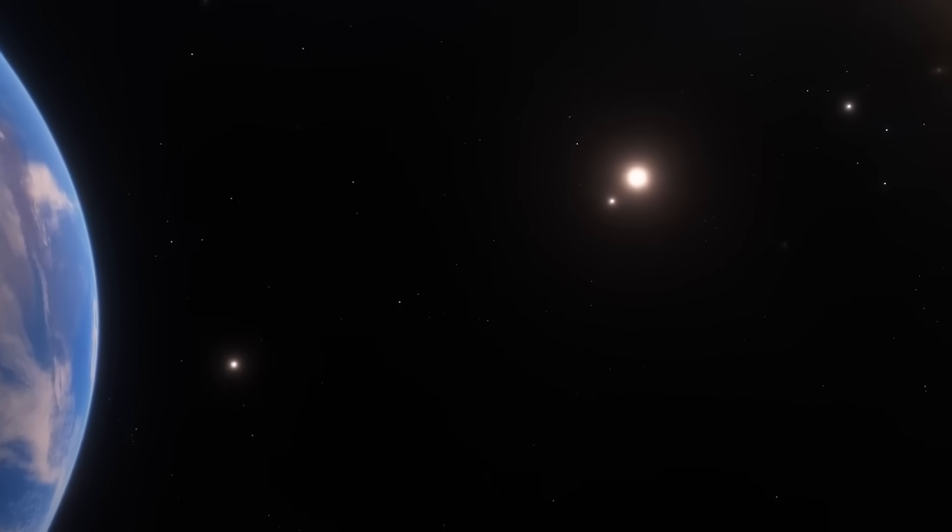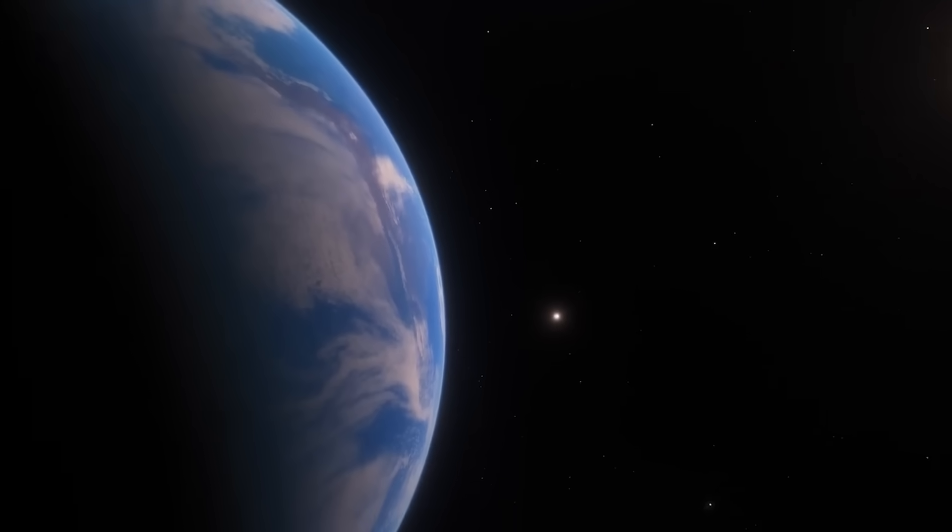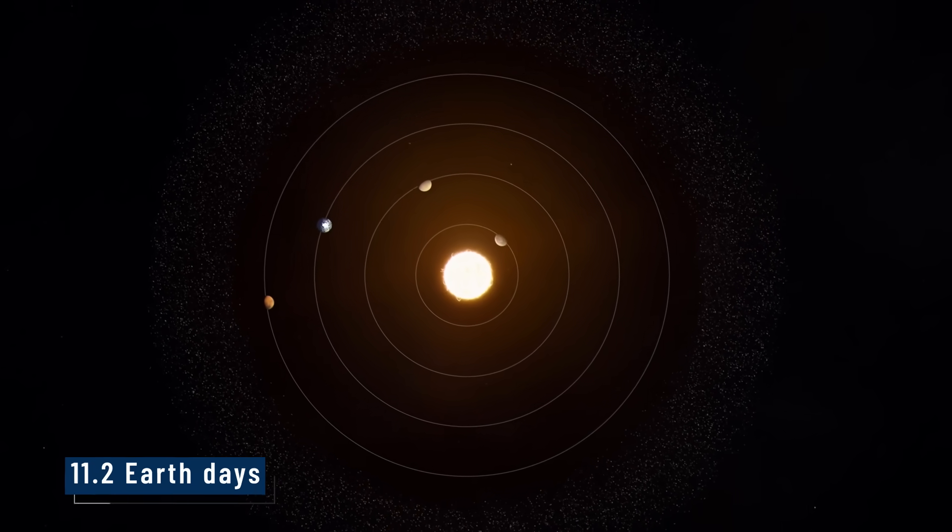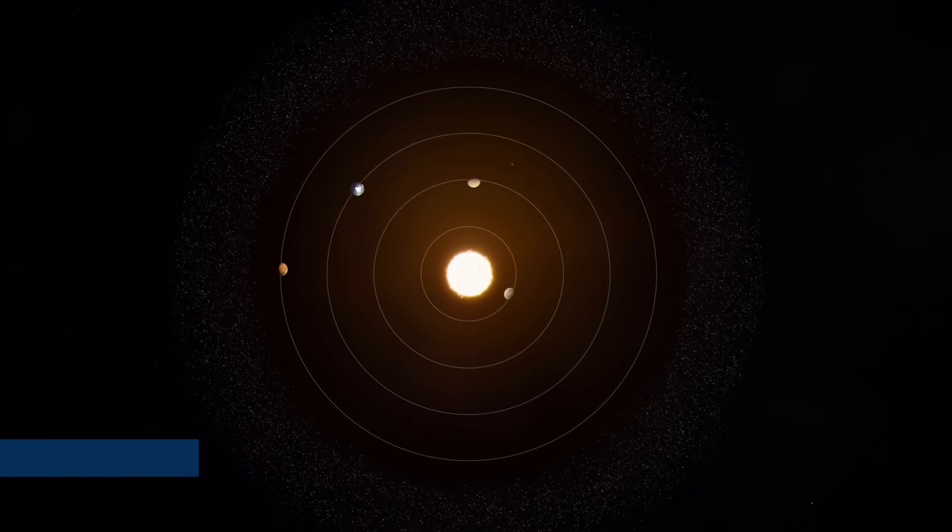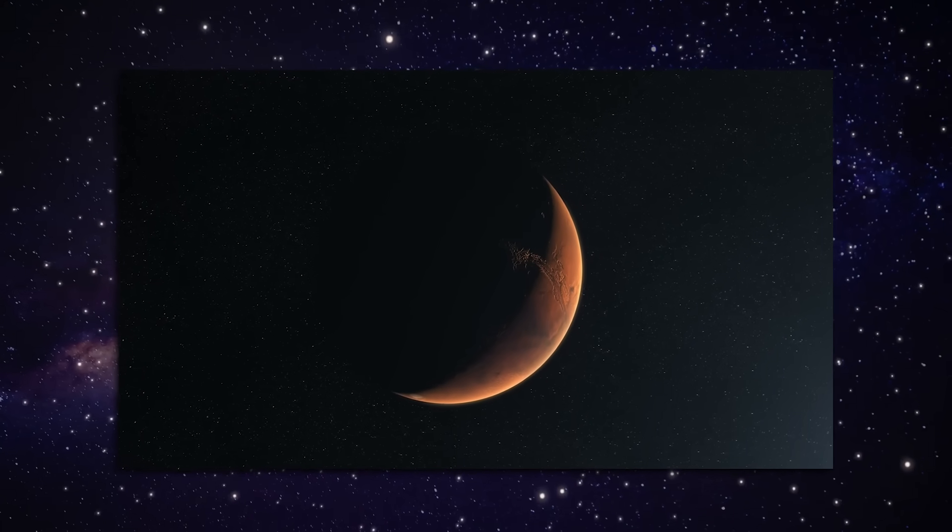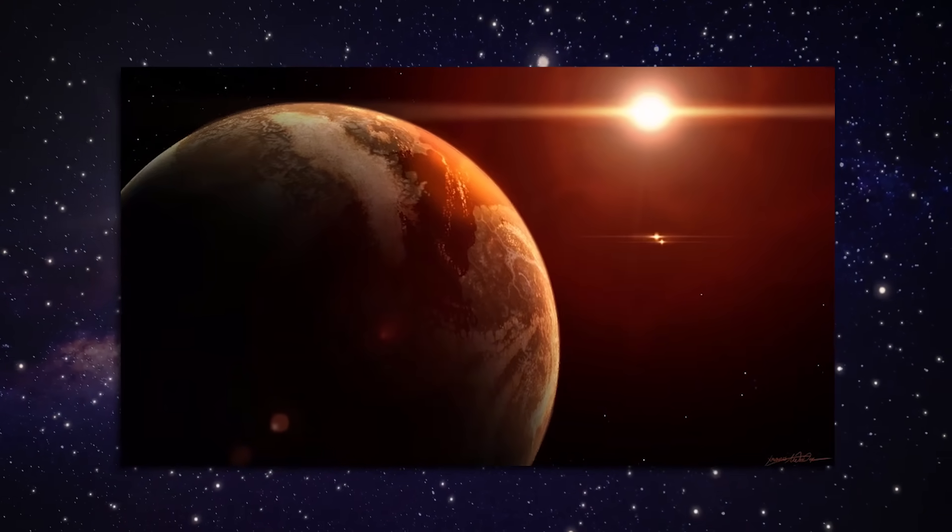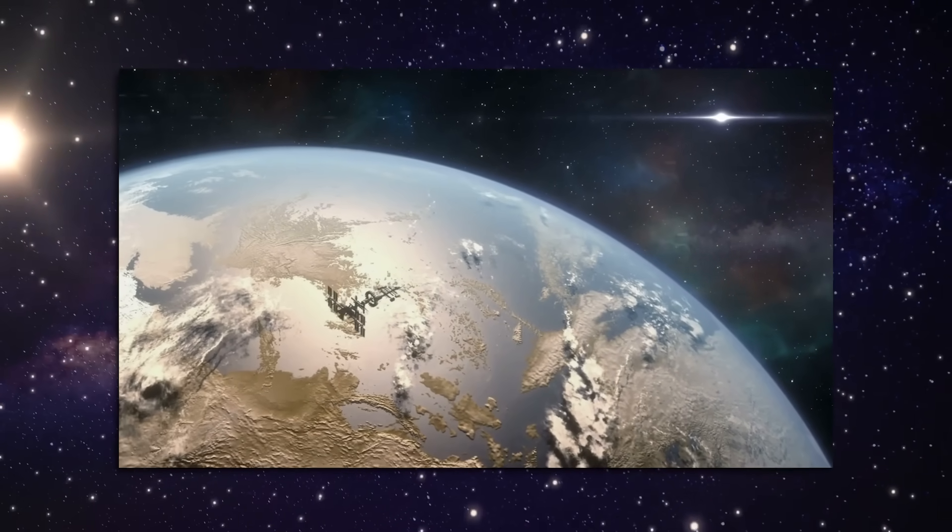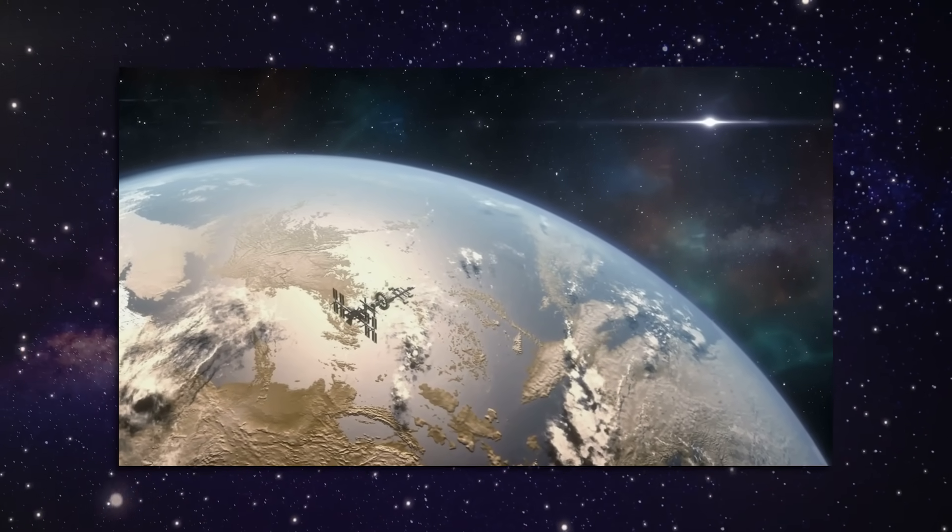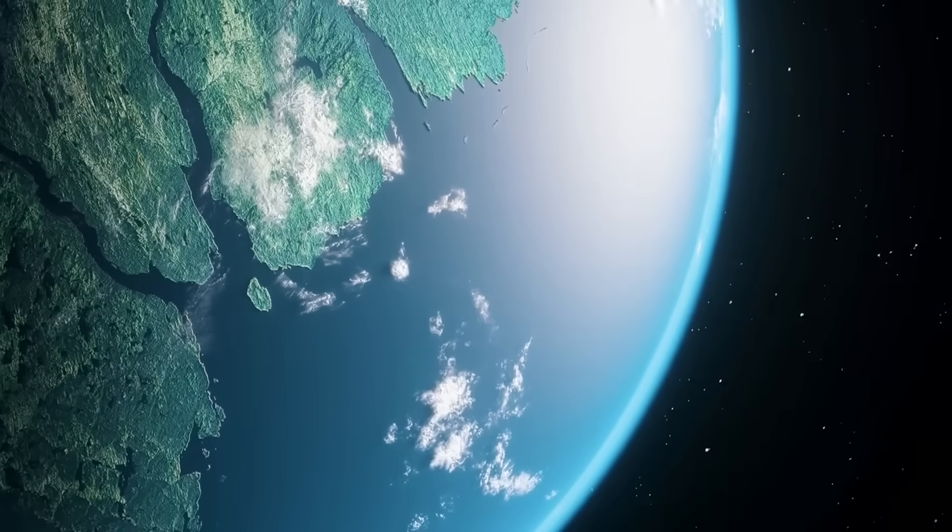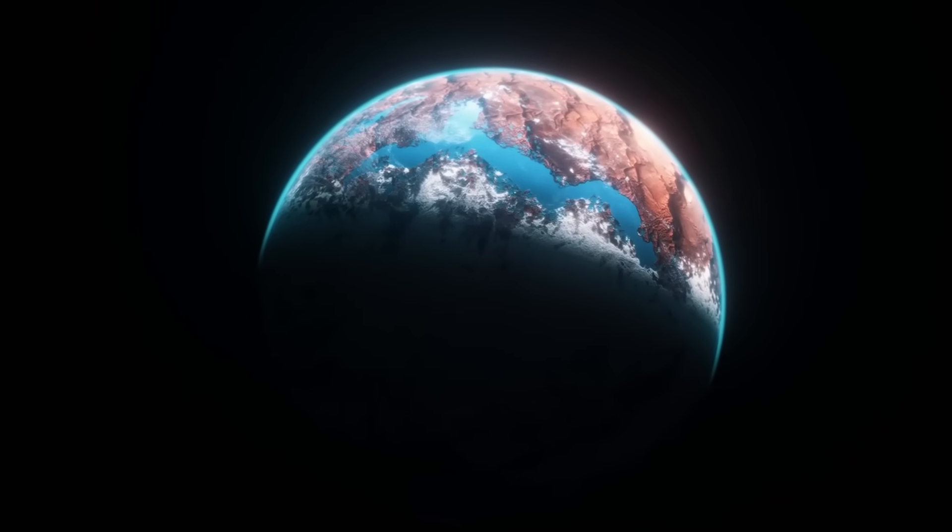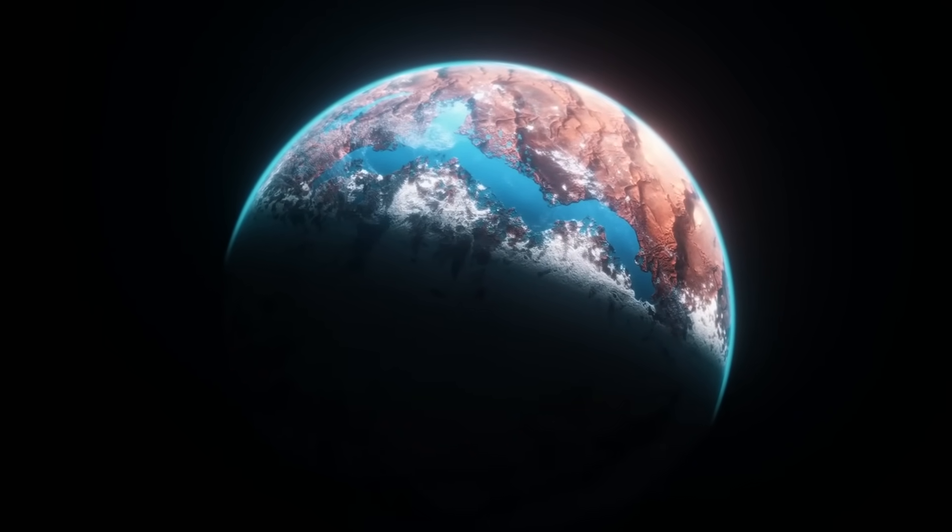Proxima b orbits very close to its star, much closer than Earth does to the sun. In fact, it completes a full orbit in just 11.2 Earth days. But because the star is much cooler than the sun, Proxima b still falls within the habitable zone. That means it gets about the same amount of energy as Earth does. In theory, that could allow water to exist on the surface. And where there's water, there could be life, but it's not that simple.